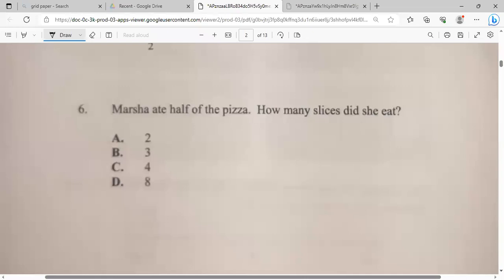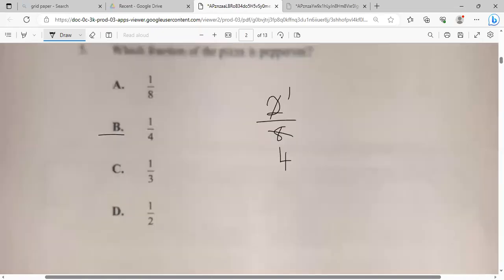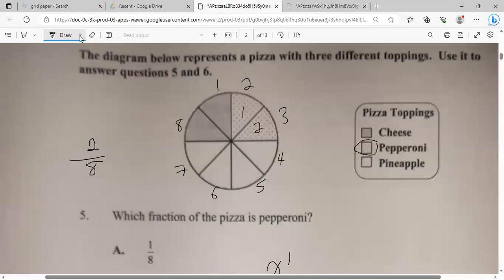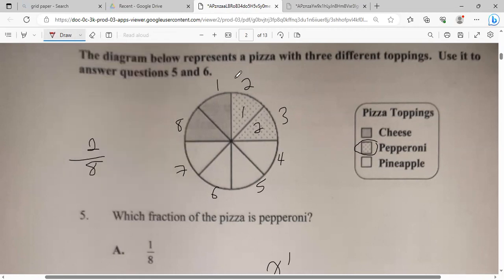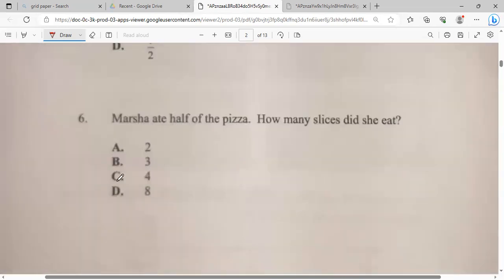Marsha ate half of the pizza. How many slices did she eat? So first, we're going to see how many Marsha ate. One, two, three, four. This is half, right? So it means that Marsha ate these. So she ate a total of one, two, three, four slices. So our answer for that would be four. So Marsha had four slices. Big up, Marsha.